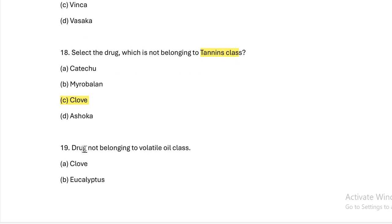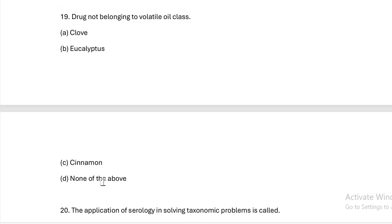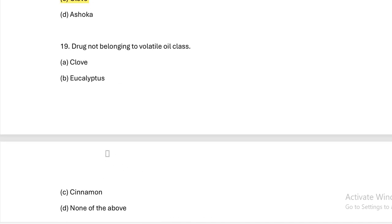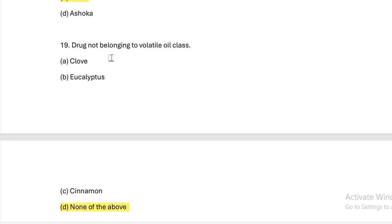Drug NOT belonging to volatile oil class. Option A: clove. Option B: eucalyptus. Option C: cinnamon. Option D: none of the above. Answer — clove, eucalyptus, and cinnamon all belong to the volatile oil class, so the answer is none of the above.